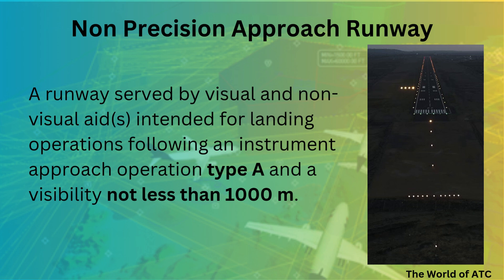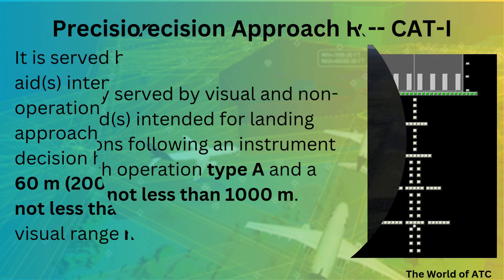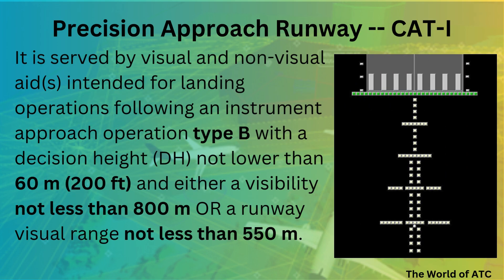Moving on to the precision approach runway CAT-1. A CAT-1 runway is served by visual and non-visual aids and intended for instrument approach operations type B. Since it is intended for type B, that means the decision height should be lower than 250 feet.